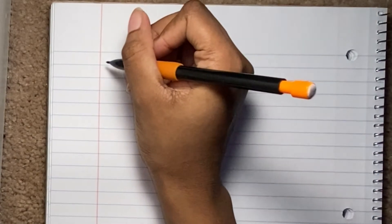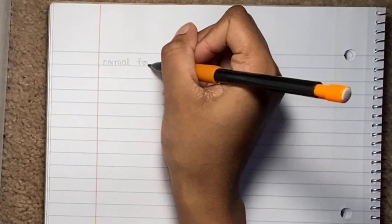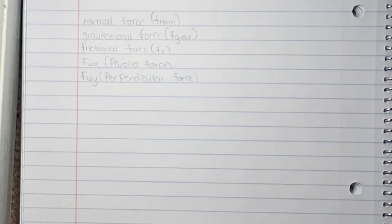Before we start labeling the forces on the inclined plane, I want us to write out the forces first. I'm going to write everything down and then go through it one by one. Now that I have everything written down, we can talk about it and then move on to drawing and labeling them. So we have the normal force.